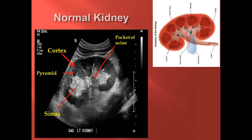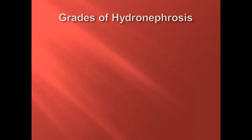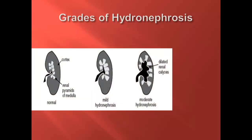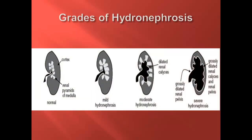When distended, the ureter appears as a tubular structure extending inferiorly from the renal pelvis. Now let's look at a diagram illustrating a normal kidney along with various grades of hydronephrosis from mild, moderate, and severe. As distal obstruction to urinary flow develops, progressively enlarging anechoic or dark areas begin to form centrally within the hyperechoic or bright sinus. This is known as hydronephrosis. The degree of hydronephrosis is therefore a continuum that has been broken down into mild, moderate, and severe categories. Though somewhat arbitrary, these categories are of clinical significance.